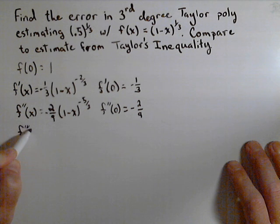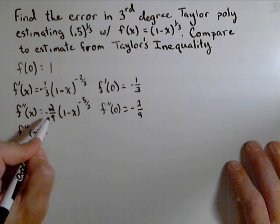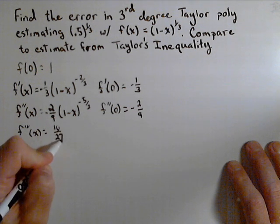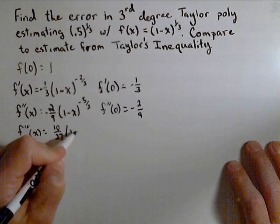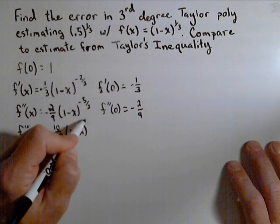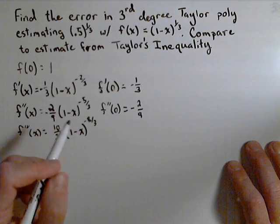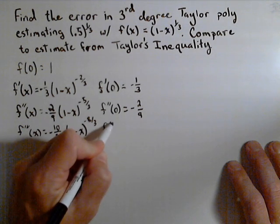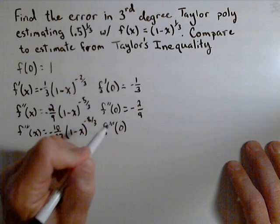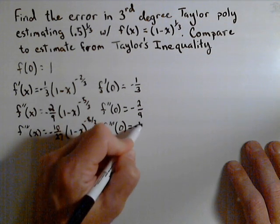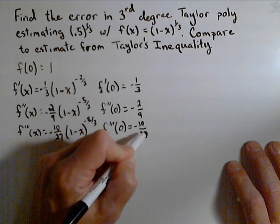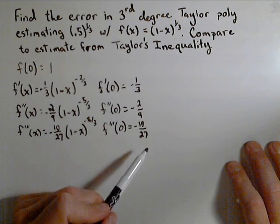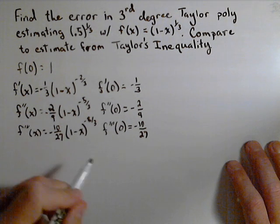f triple prime of x is equal to, we bring this down and multiply, that's going to give us 10 over 27 times one minus x to the negative eight-thirds times, again, a negative one because of the chain rule, making that negative. So f triple prime of zero is negative 10 over 27. So we have the coefficients that'll help make our Taylor polynomial, or we have our derivatives at zero that'll make our coefficients, I should say.